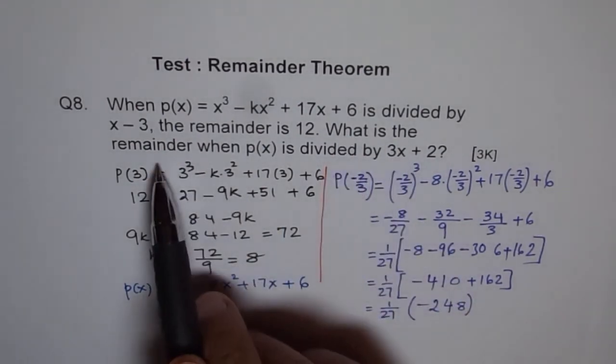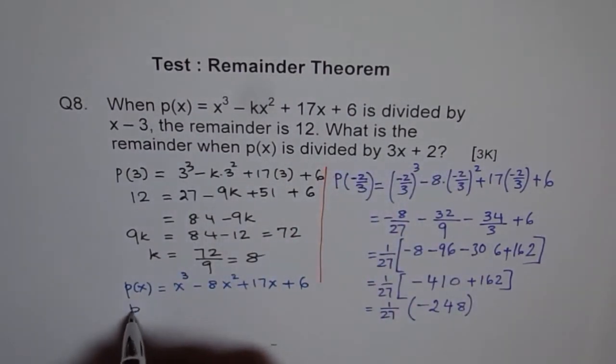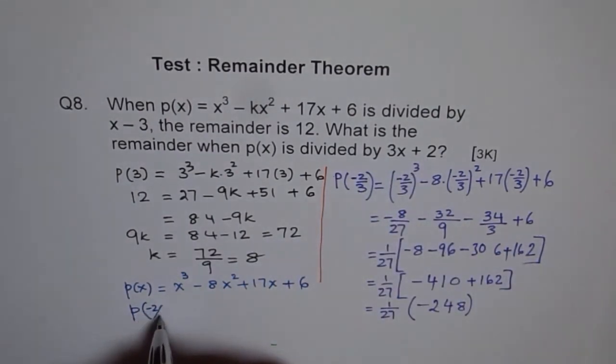And then finally, when you found what is the remainder when p(x) is divided by this, then basically what we are trying to find is p of minus 2 over 3. Plug in minus 2 over 3 in your equation and find your answer. Use calculator. That is your solution. Thank you.